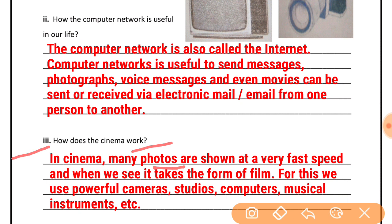Next question: how does cinema work? Cinema mein bahut hi tej gati se bahut saare photos dikhaye jaate hain — many photos are shown at a very fast speed. And when we see them, it takes the form of a film. For this, we use powerful cameras, studios, computers, and musical instruments.